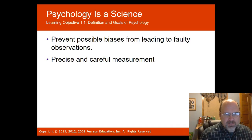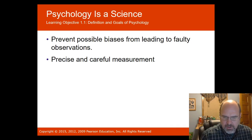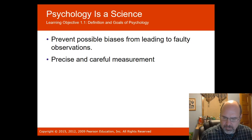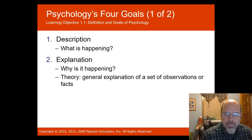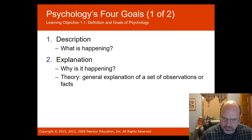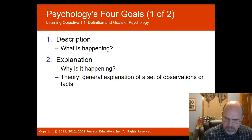Psychology is a science. In order to prevent possible biases from leading to faulty observations, we follow what's called the scientific method. It prevents biases from leading to faulty observations, since there's a possibility of seeing what one expects to see. We use precise and careful measurement using the scientific method.